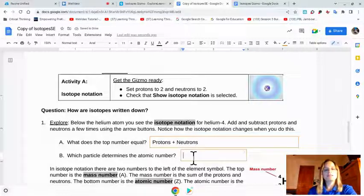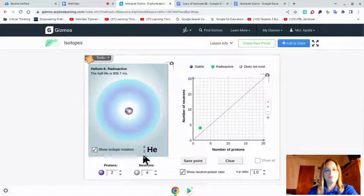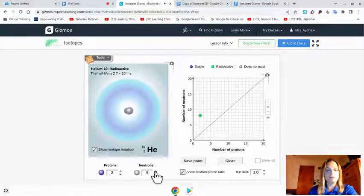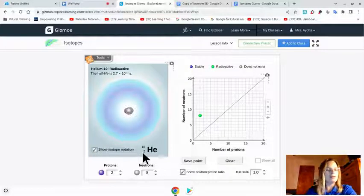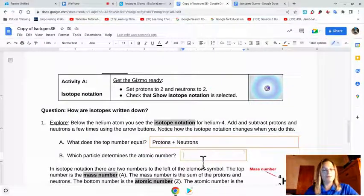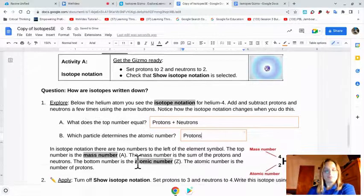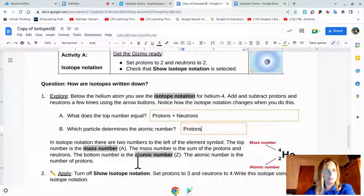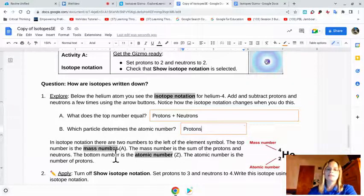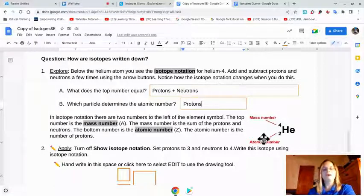Which particle determines the atomic number? The atomic number is the bottom number, this 2. Changing the number of neutrons does nothing to the atomic number. If we're talking about protons and neutrons, and neutrons do nothing, then what number determines the atomic number would be the protons. If I teach you nothing else, number of protons equals atomic number equals element identity. In isotopic notation, the top number is the mass number, or protons plus neutrons. The bottom number is the atomic number.